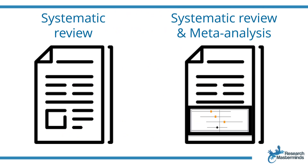To summarize: a systematic review refers to the summary of primary studies into one study using rigorous and systematic methods, while a meta-analysis refers to the statistical analysis used to pool all the findings from the different primary studies into one analysis. Not all systematic reviews include a meta-analysis, but all meta-analyses are part of systematic reviews.